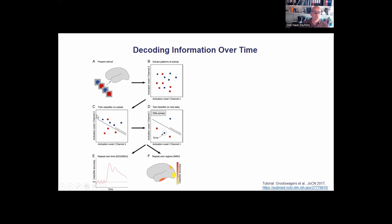This is what you can do with classifier methods: you find a line — in the case of two channels — that distinguishes one class of stimuli from another as best you can. You do that on one subset of your data to avoid overfitting and then test on another set. Most of the time when we talk about decoding we are talking about these linear classifiers: a line that separates classes, tested on a previously unused part of your data to see if it generalizes to unseen data.